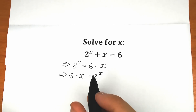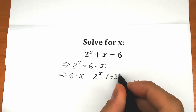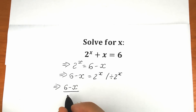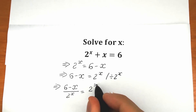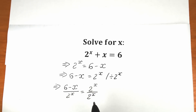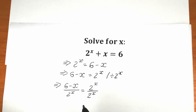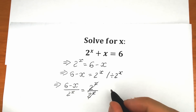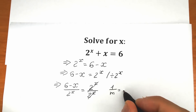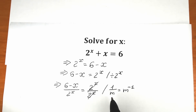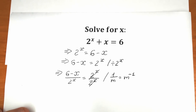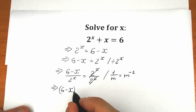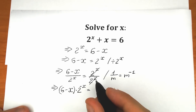Now let's divide both sides by 2 to the power x. When we divide, it appears in our denominator. On the right side we can cancel 2^x over 2^x since that equals 1. On the left side, we bring 2^x from the denominator to the numerator — from school you know that 1 over m equals m to the power minus 1, so we change the sign of the power. As a result we have: (6 minus x) times 2 to the power minus x equal to 1.